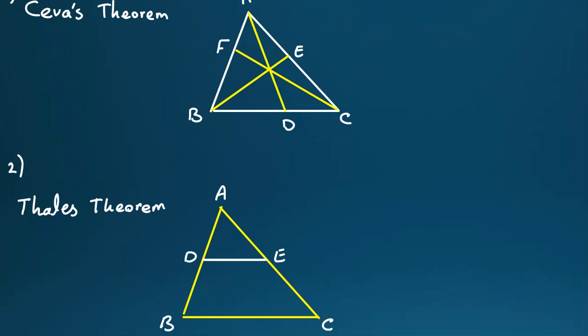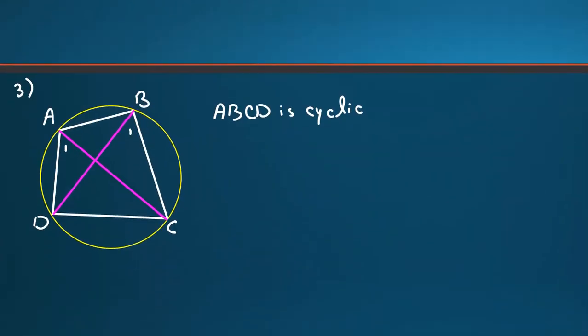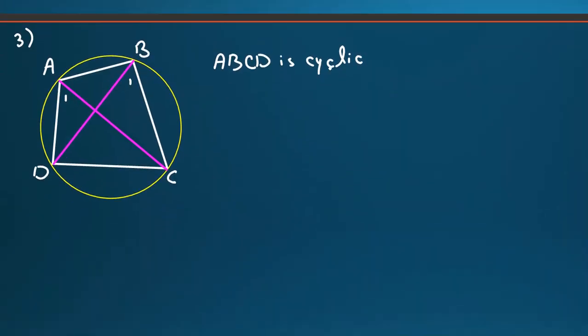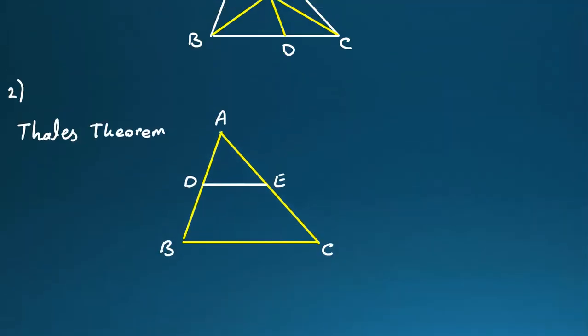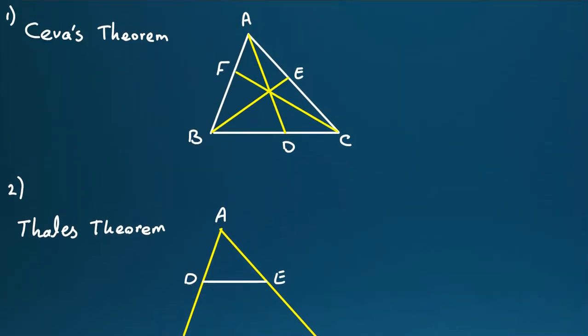Ceva's theorem in the beginning of the solution. Thales theorem. And one condition for when ABCD is cyclic. We have four conditions for a quadrilateral that is cyclic. These things are useful from qualifying level up to IMO. Two of them relate to angles, two of them to lengths. They are around, as I said before, these theorems are in any book.